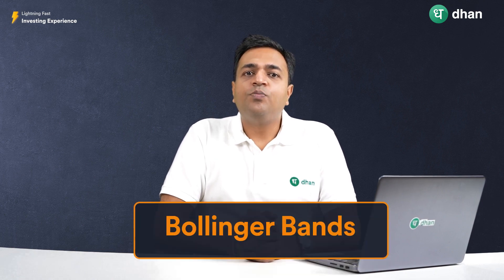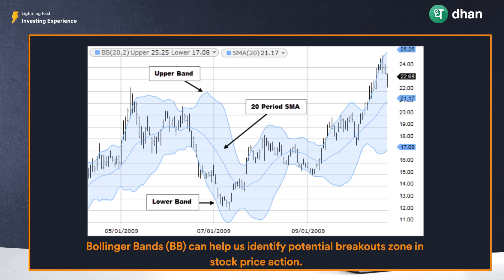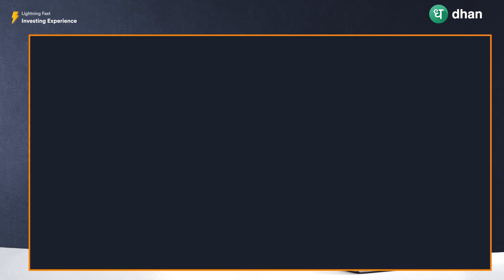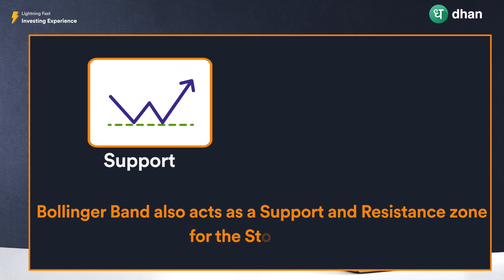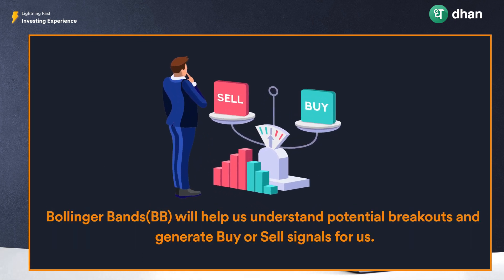Bollinger Bands can help us identify potential breakout zones in stock price action. They also act as a support and resistance zone for the stock price. By providing a view on the volatility of stock price movement over a given period, Bollinger Bands help us understand potential breakouts and generate buy or sell signals.